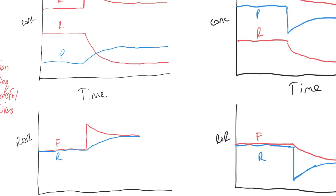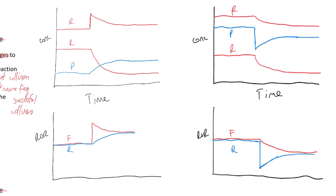Looking at the left-hand side of the graph: the system was initially at equilibrium — we know because all the concentrations don't change and the forward rate of reaction doesn't change. Then all of a sudden I add in some reactant. You notice that the other two concentrations don't change at that point in time. Since I've added some reactants, the forward rate of reaction increases. What happens to the concentration of the products? Nothing. So therefore the reverse rate of reaction doesn't change at that point in time.